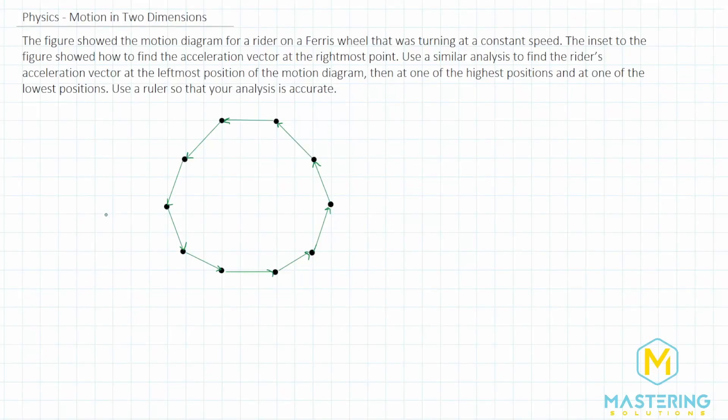Welcome to Mastering Solutions. In this motion in two dimensions problem, they tell us that there is this Ferris wheel, and they took an image from the book chapter.